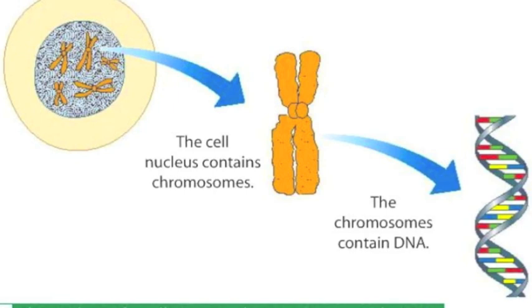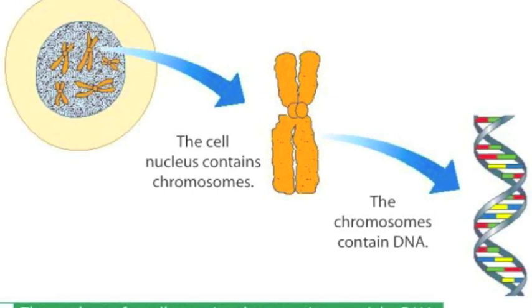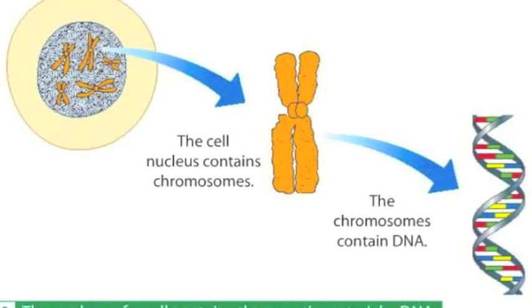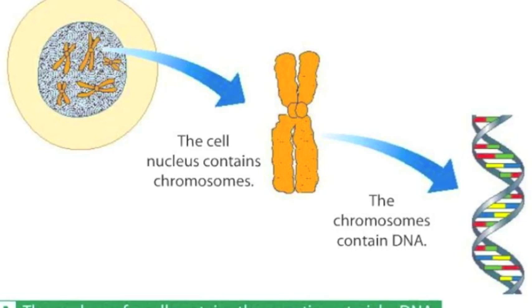In the nucleus of a cell are chromosomes, which are made up of genes. In turn, genes are made of a chemical called DNA. DNA contains instructions for making the cell and telling it what to do. These instructions are called the genetic code.